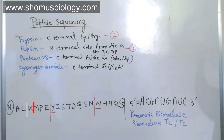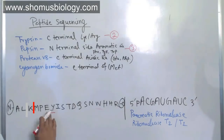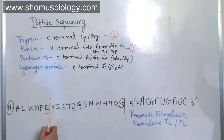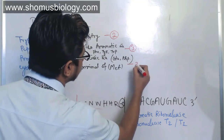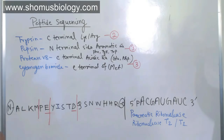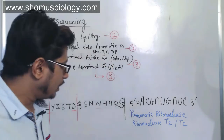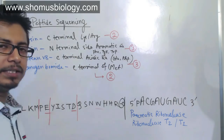For protease V8: it cleaves the C-terminal side of acidic amino acids. The acidic amino acids in this sequence are E (glutamic acid) and D (aspartic acid), giving two cuts and three fragments. For cyanogen bromide: it cleaves the C-terminal side of methionine only. There is only one methionine in this sequence, so one cut generates two fragments. Remember: the number of cuts is always one less than the number of fragments.